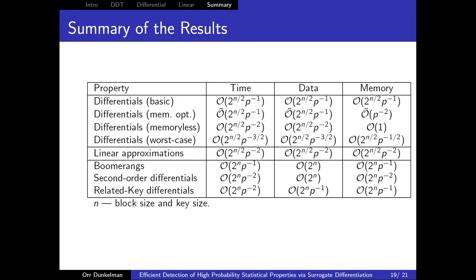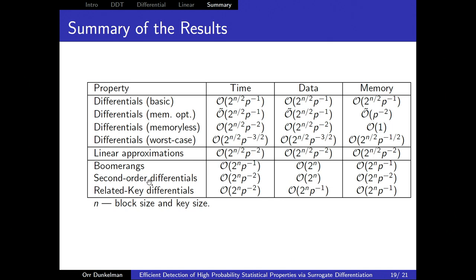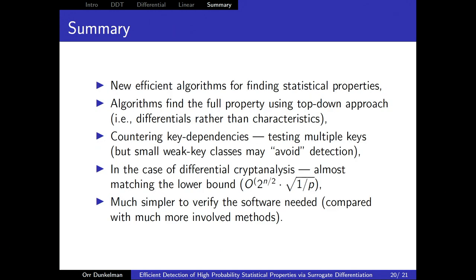Summary of results: finding differentials can be done in 2^(n/2) · p^(-1) data and memory with a memory-optimized version available using parallel collision search. For the worst case assumption, time is roughly 2^(n/2) · p^(-3/2). We can also find boomerangs, second-order differentials, and related-key differentials. Importantly, we find differentials — not differential characteristics. We know alpha and beta but not which characteristic took the input difference to the output difference, and we don't need to care.